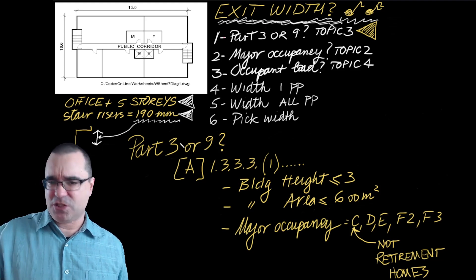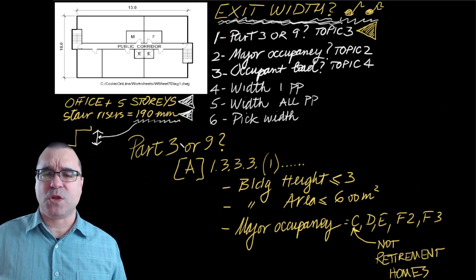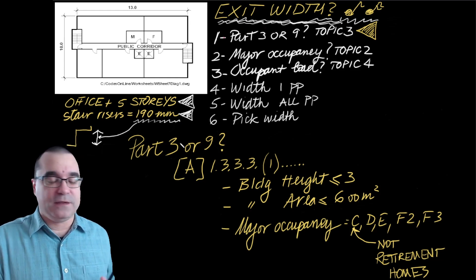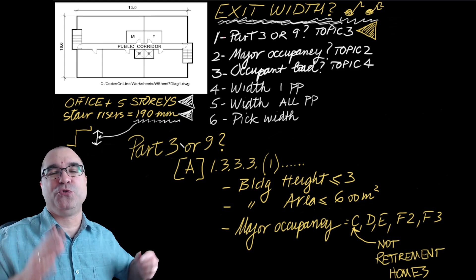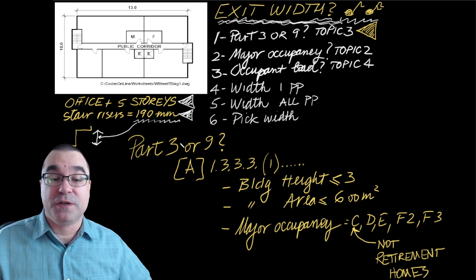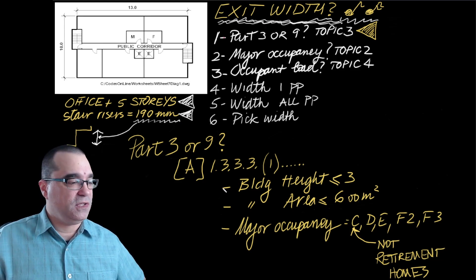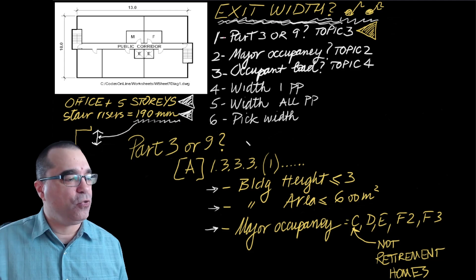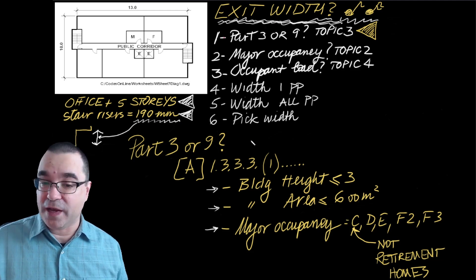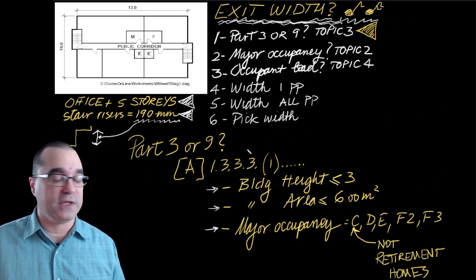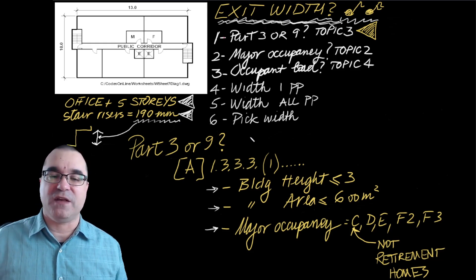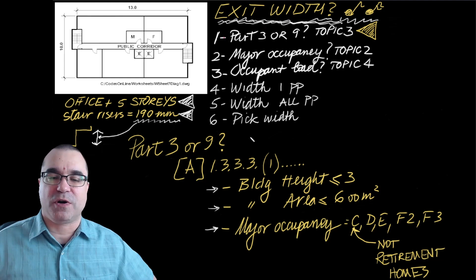To do this based on Topic 3, we're going to try to prove that this building is a Part 9 building. That's based on these three conditions according to sentence 1.3.3.3.1 under Division A of the Ontario Building Code. If even one of those three conditions fails, automatically this is a Part 3 building.